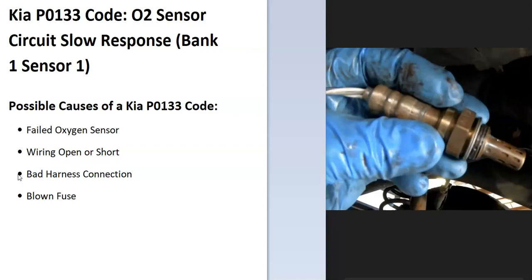So that'd be troubleshooting. Bank one is always the side of the engine with the number one cylinder, and sensor one is always the first sensor going down on the exhaust. Some of the possible causes of this: it could be a failed oxygen sensor, it could be in the wiring, could be a bad harness connection, and possibly a blown fuse.